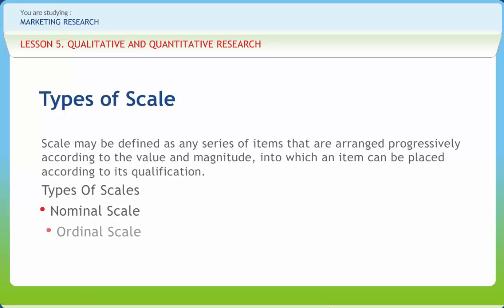The Ordinal Scale arranges objects or alternatives according to their magnitude in an ordered relationship. In this scale, ranking can be done as excellent, good, fair, or poor. It helps in mode and median calculations.